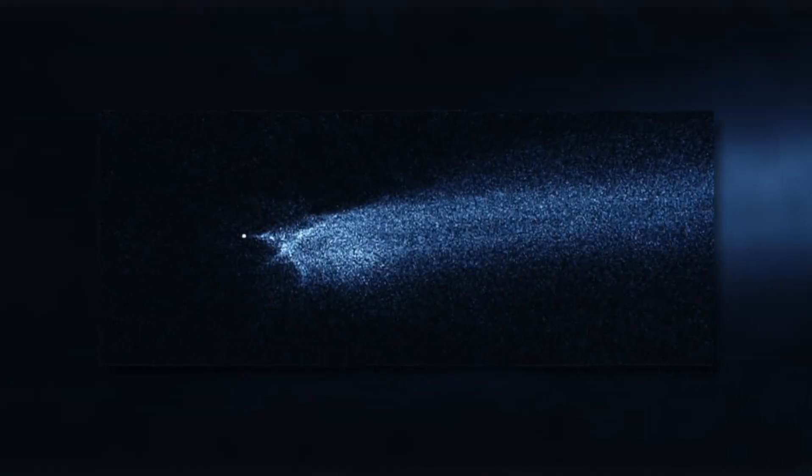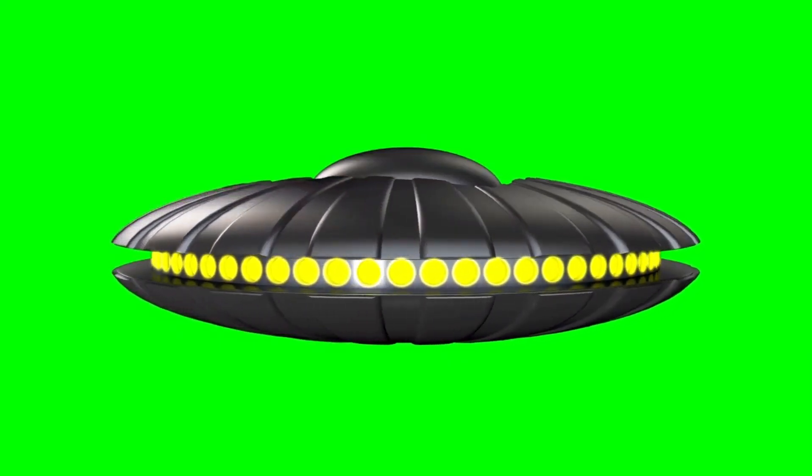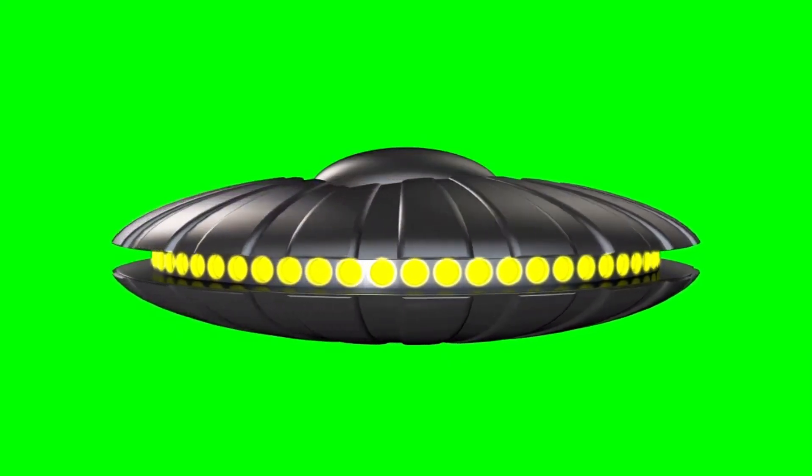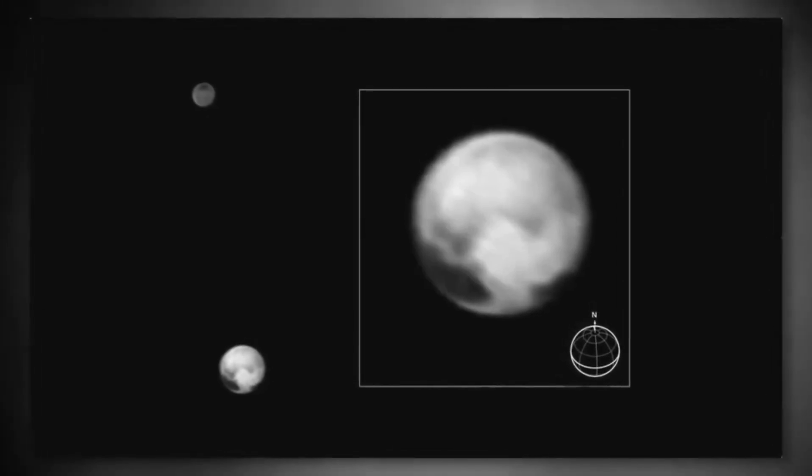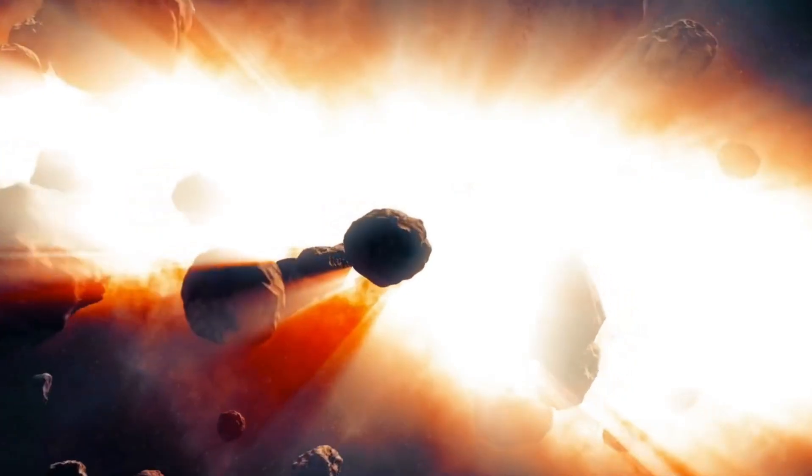The strange Black Knight. The object named Black Knight orbits Earth, sparking many theories about its origin. Officially it's said to be a lost thermal blanket, but sightings before manned space flight mentioned this object. Some believe it's an extraterrestrial spaceship or satellite observing mankind.